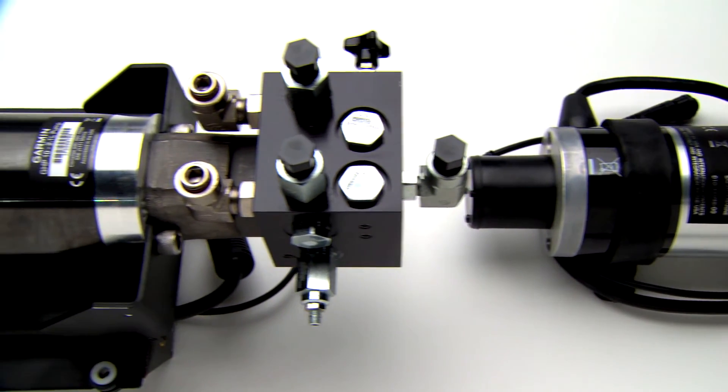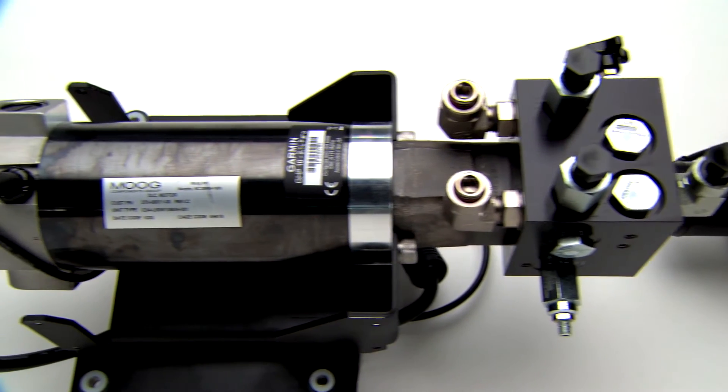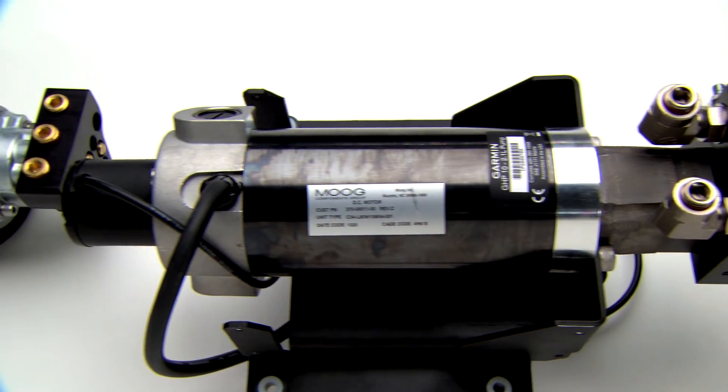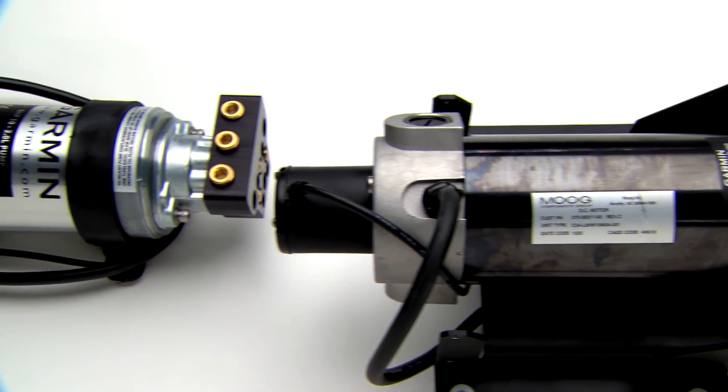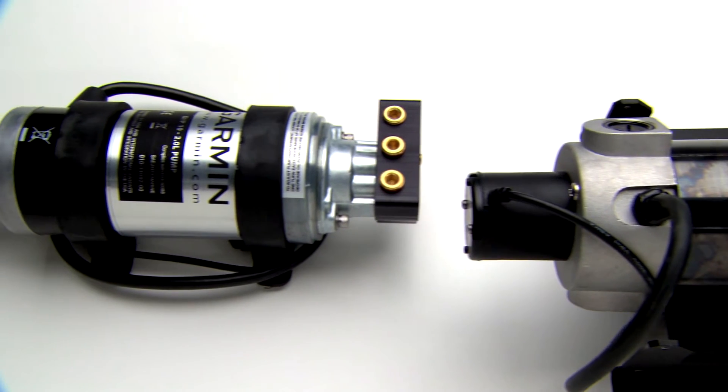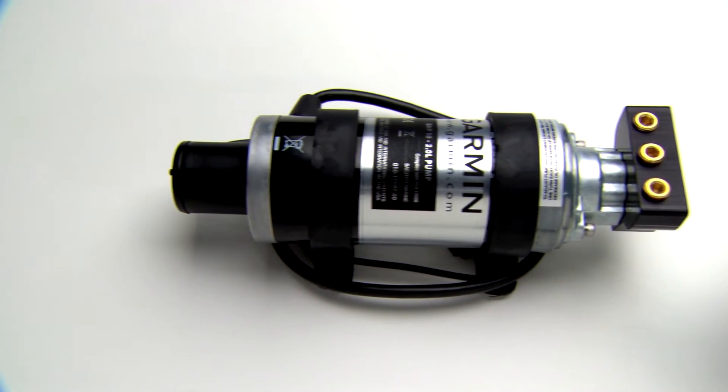With steering ram capacities ranging from 6 to 25 cubic inches and pumps designed to fit both balanced and unbalanced steering systems, Garmin can equip just about any boat with the ideal pump for the job.